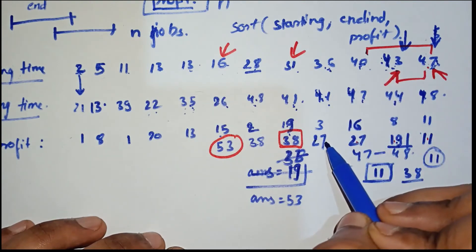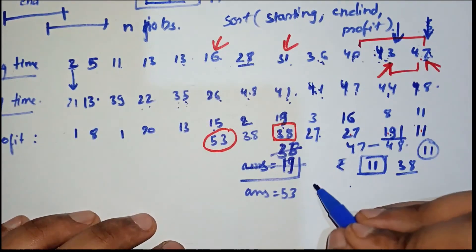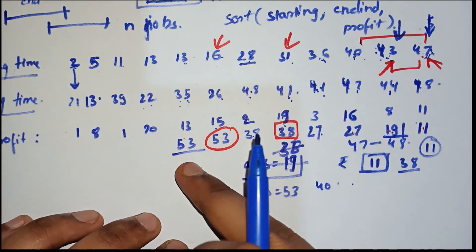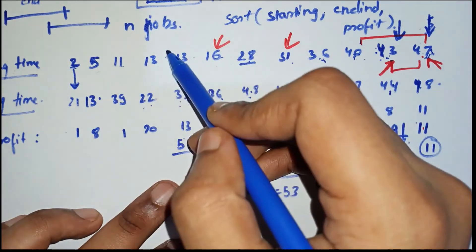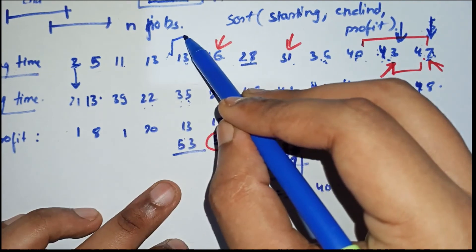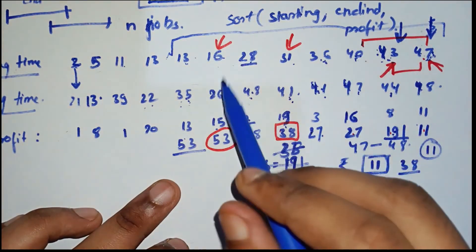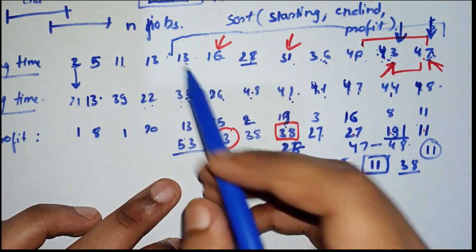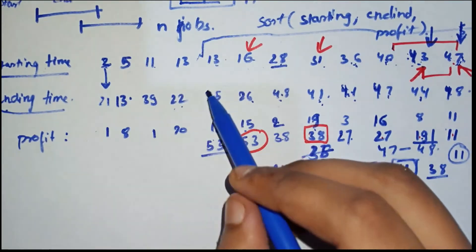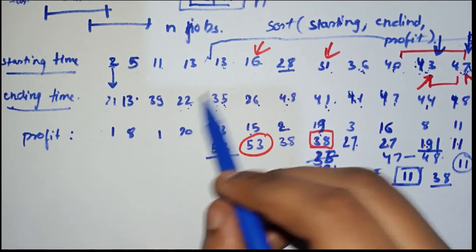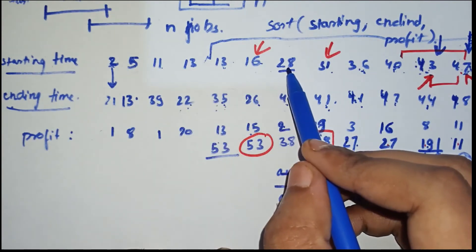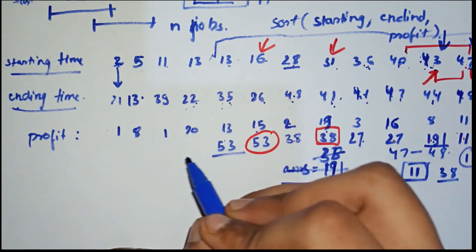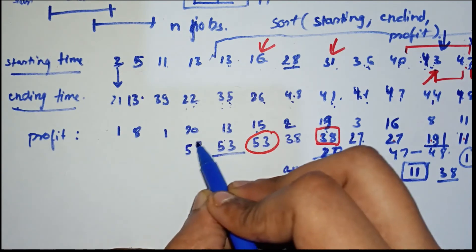Now for job 13-35: lower bound of 35 is 36, so 27 plus 13 equals 40. That's less than 53, so answer stays 53. For job 11-22: lower bound of 22 in the starting array is 28, so 38 plus 20 equals 58. 58 is greater than 53, so our answer updates to 58.